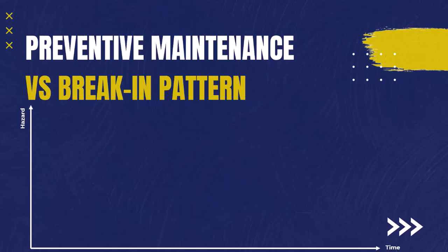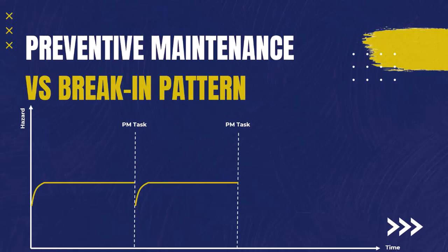Now let's check the same in the case of the initial break-in pattern. The hazard would be constant over time until we interfere by changing parts. We would have a very short period where the hazard is lower, but then a rapid increase in hazard back to the same level again. So we have spent time and resources without any noticeable reduction in the hazard.